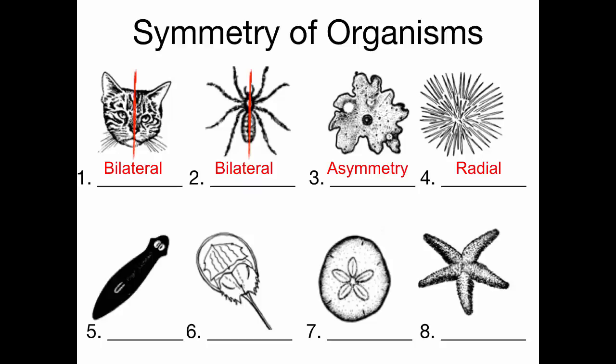This is called a planaria — it's a flat worm. We will look at them next week. It has bilateral symmetry — draw a line right down the middle and you have two equal parts. And this jellyfish — bilateral symmetry, two equal sides.